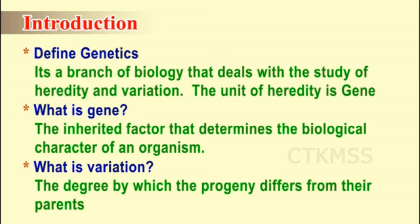So genetics is the branch of science that deals with the study of heredity and variation. The unit of heredity is the gene. Gene is a very important factor — it is the inherited factor that determines the biological character of an organism. Each and every organism shows different characters determined by genes. For example, we have genes for hair color, height, and skin color, and various genes control these characters.